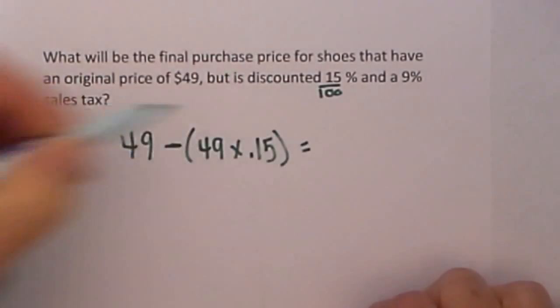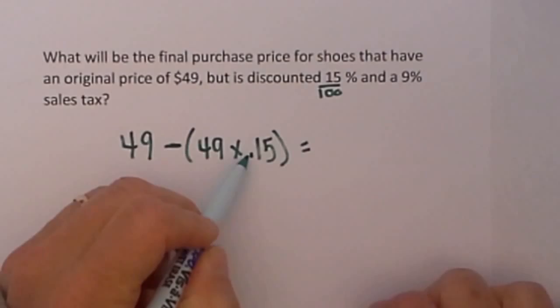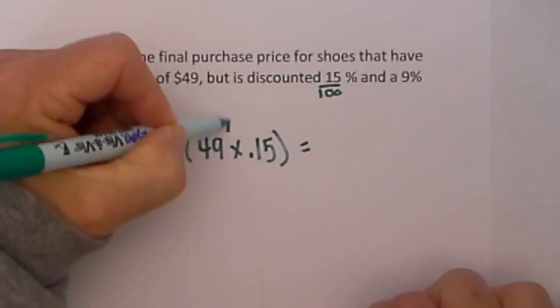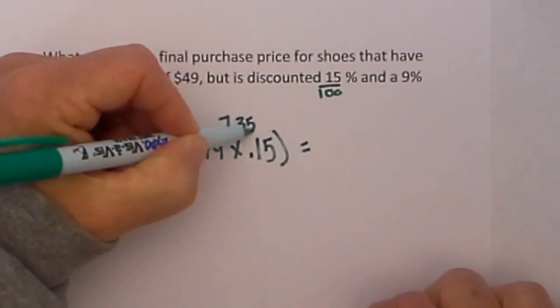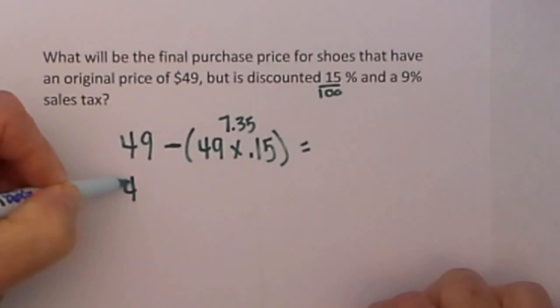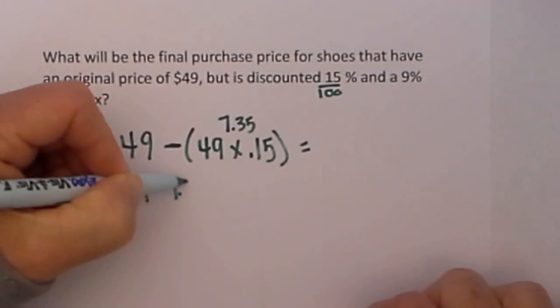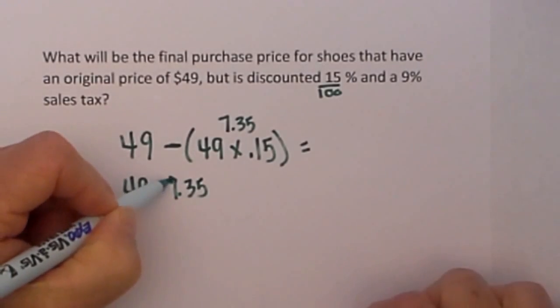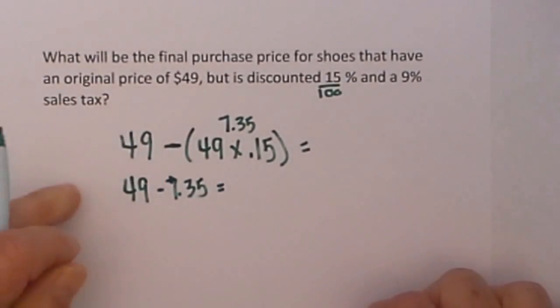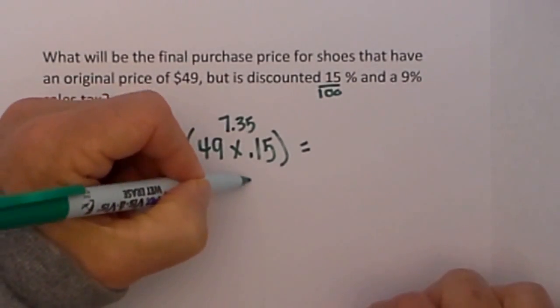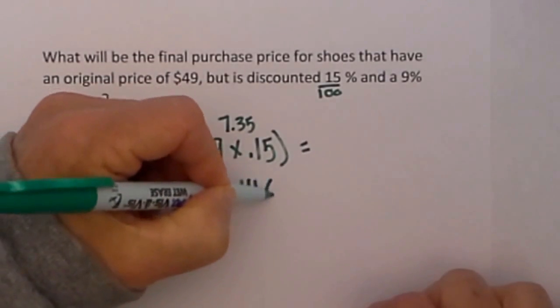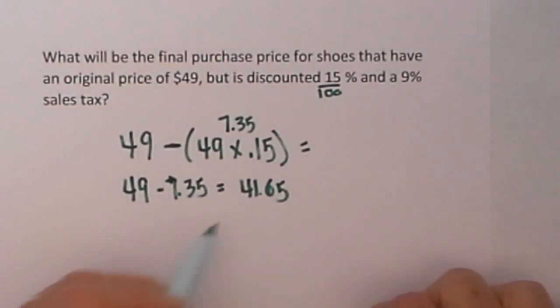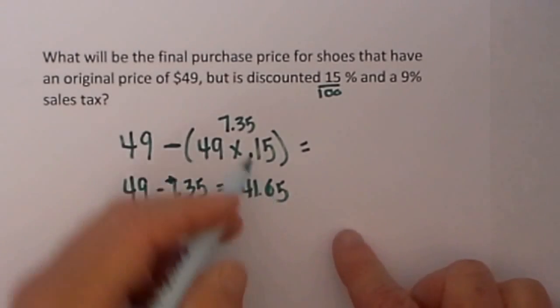That is $7.35 so I will take 49 minus $7.35 because that's how much the discount is going to be. And when I subtract those two numbers I get $41.65. 49 minus $7.35 is $41.65. Now this will be my discounted price but I need to add my sales tax to it.